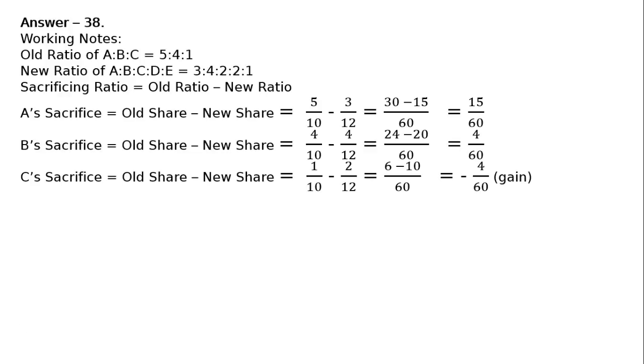Sacrificing ratio of A:B is equal to 15:4. D's share of goodwill for 2/12th share, as he is paying Rs. 90,000 as premium of goodwill.